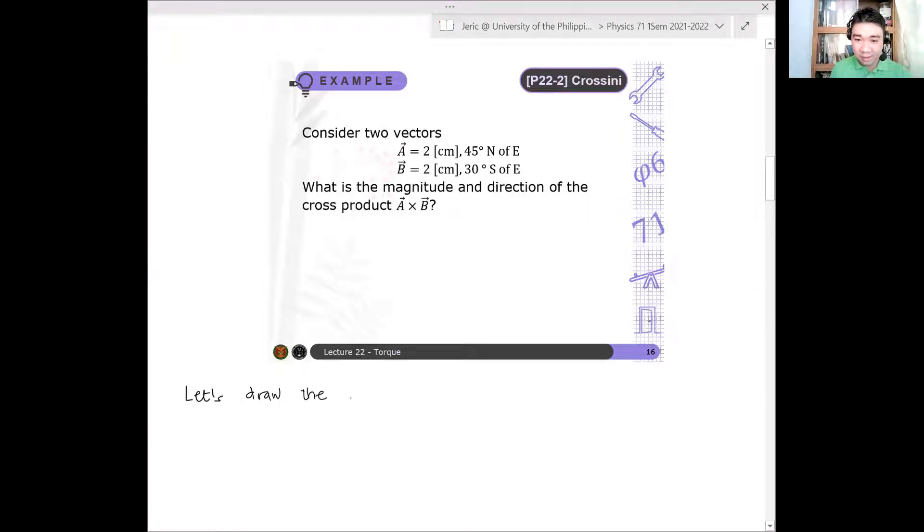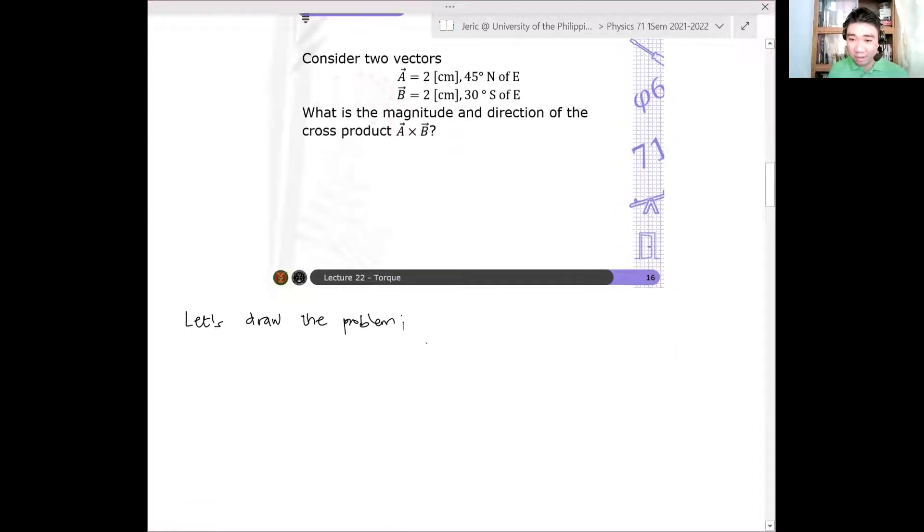When we draw it, it looks like this. So you have A. This is our coordinate system - this is X and this is Y. Vector A is about 2 centimeters, 45 degrees north of east. When you use this notation, you start with east, turn 45 degrees towards north. So the direction of vector A is like this. This is vector A.